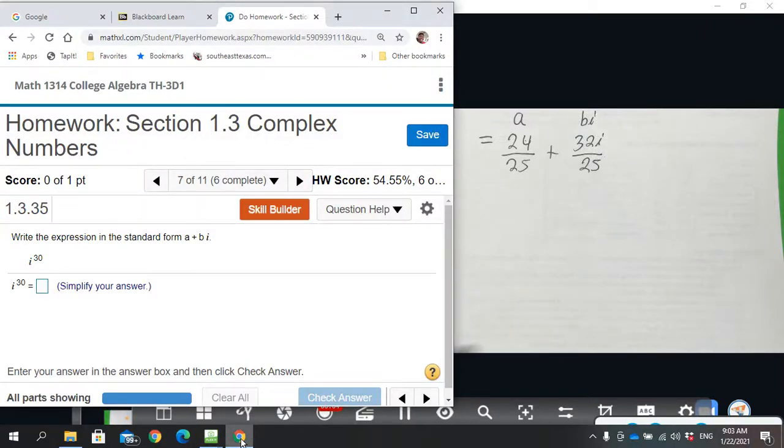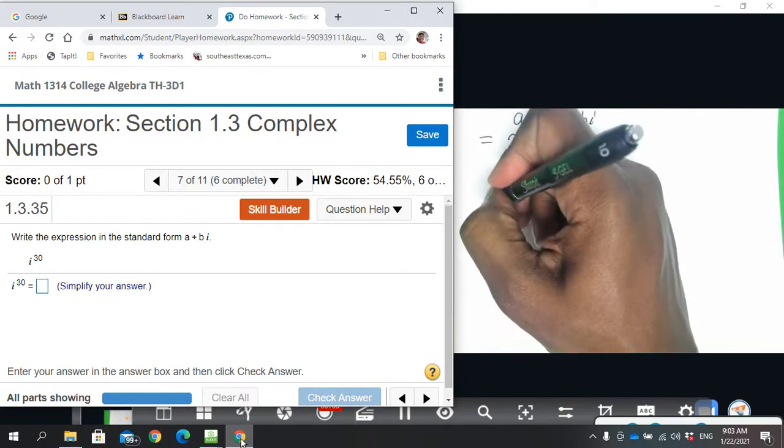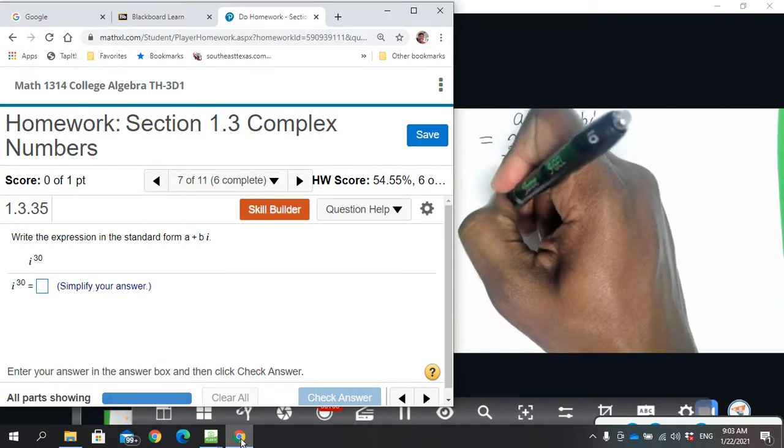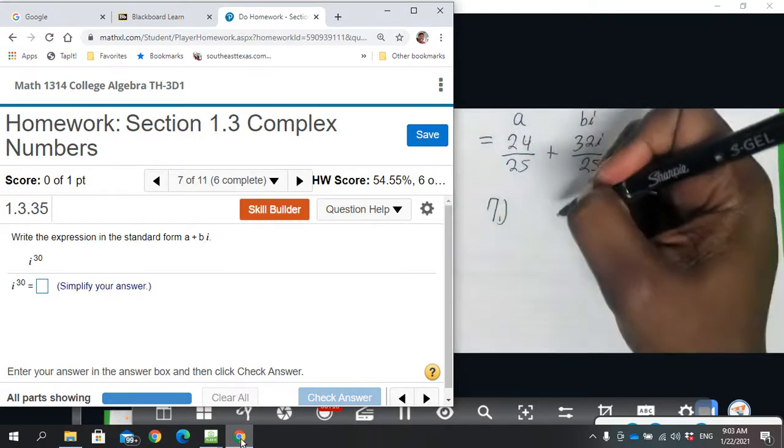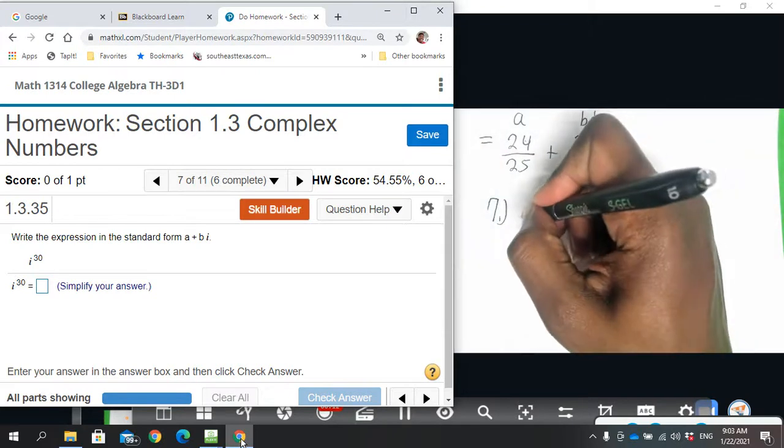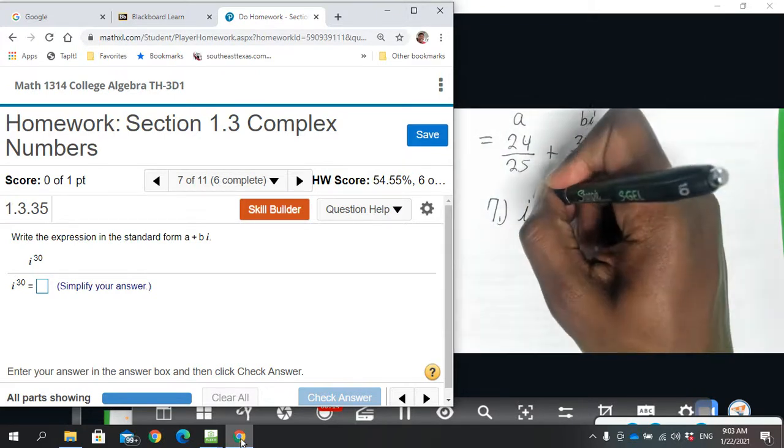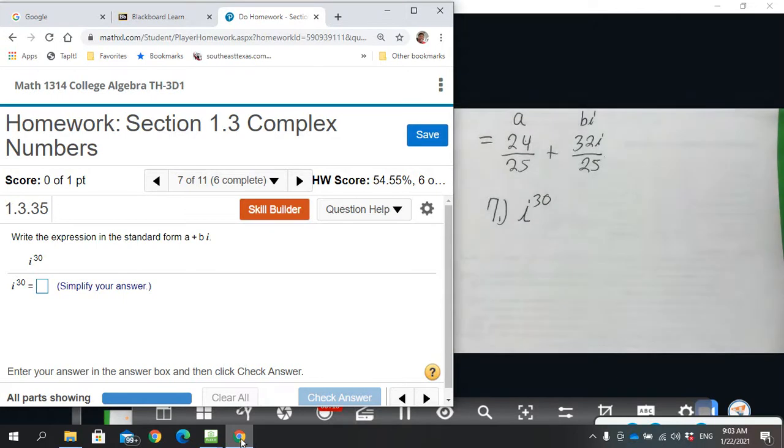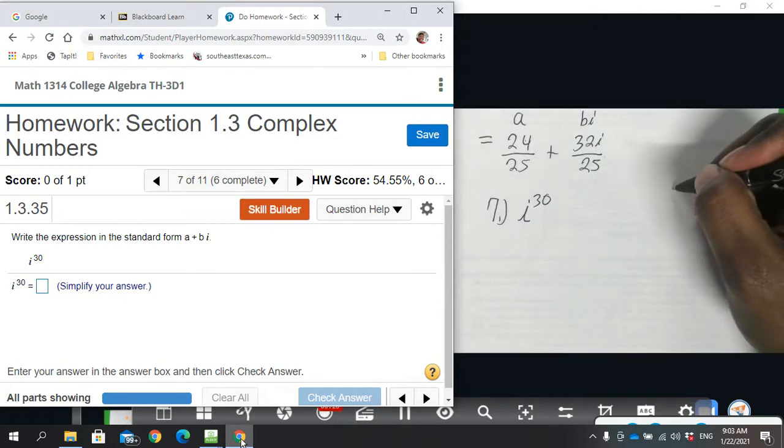Number seven, this is one of those where we want to find out what this iteration of i is equivalent to. So we have i to the thirtieth power. My suggestion is recall we have four iterations: we have i, i squared which is equal to negative one.